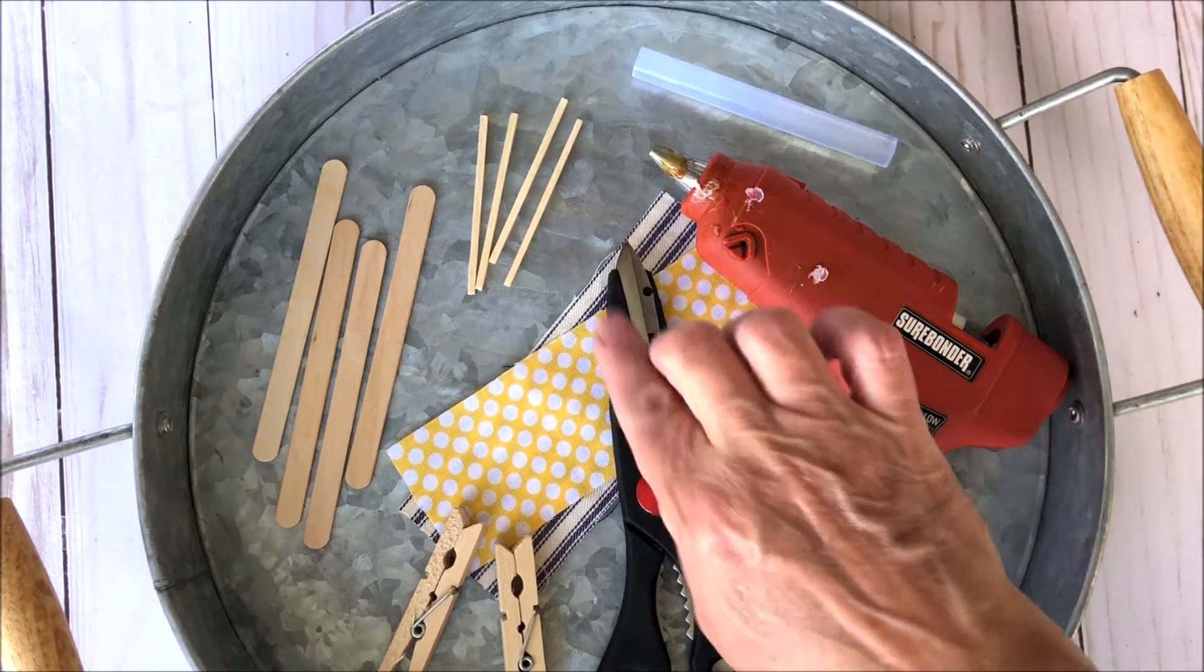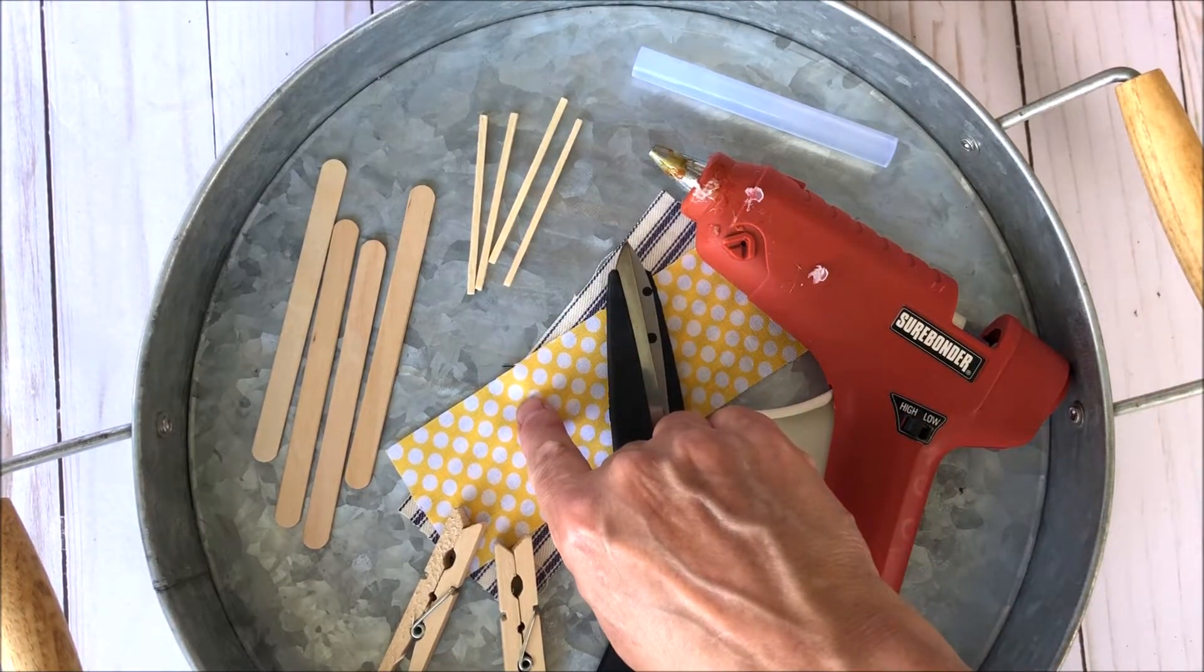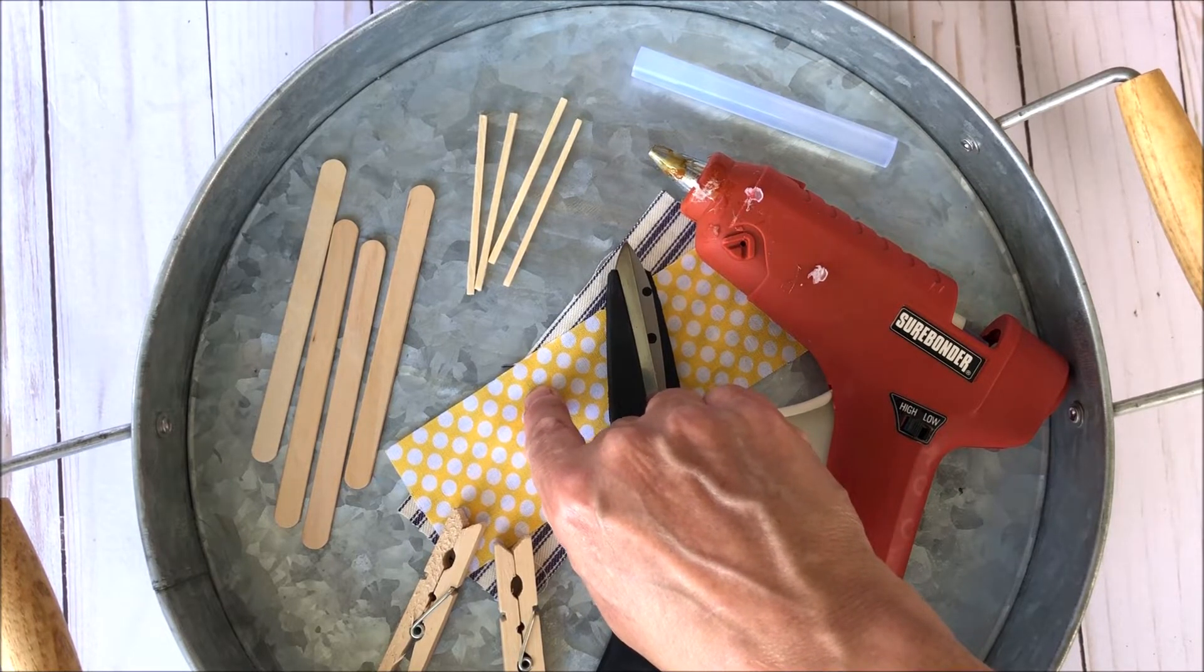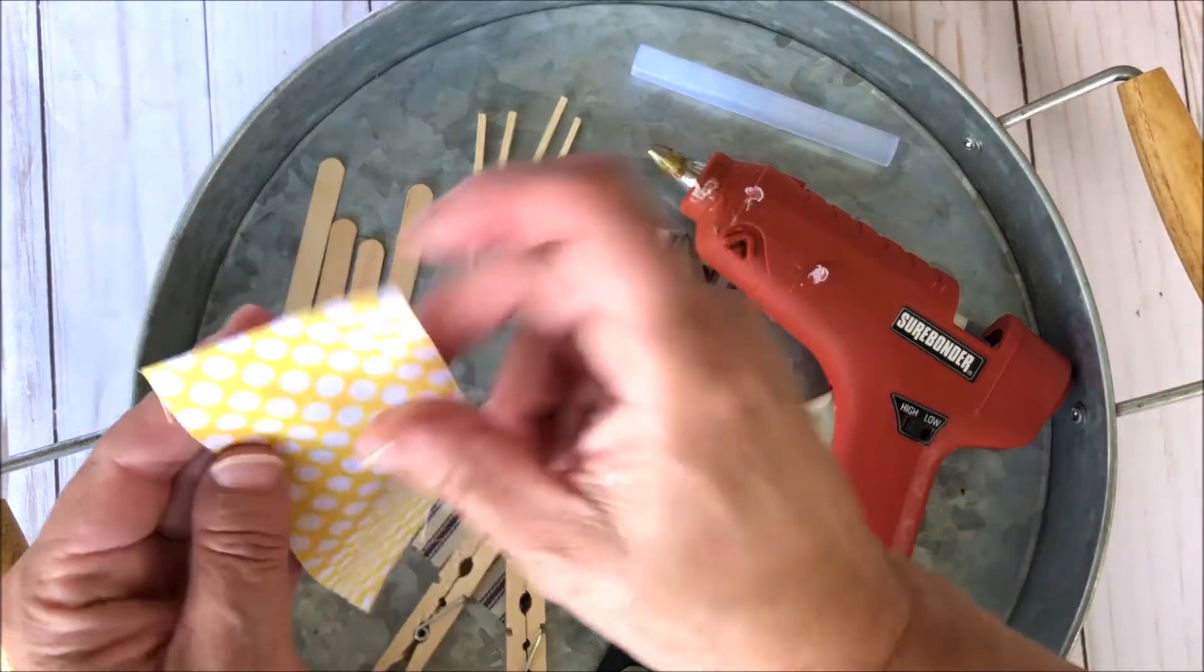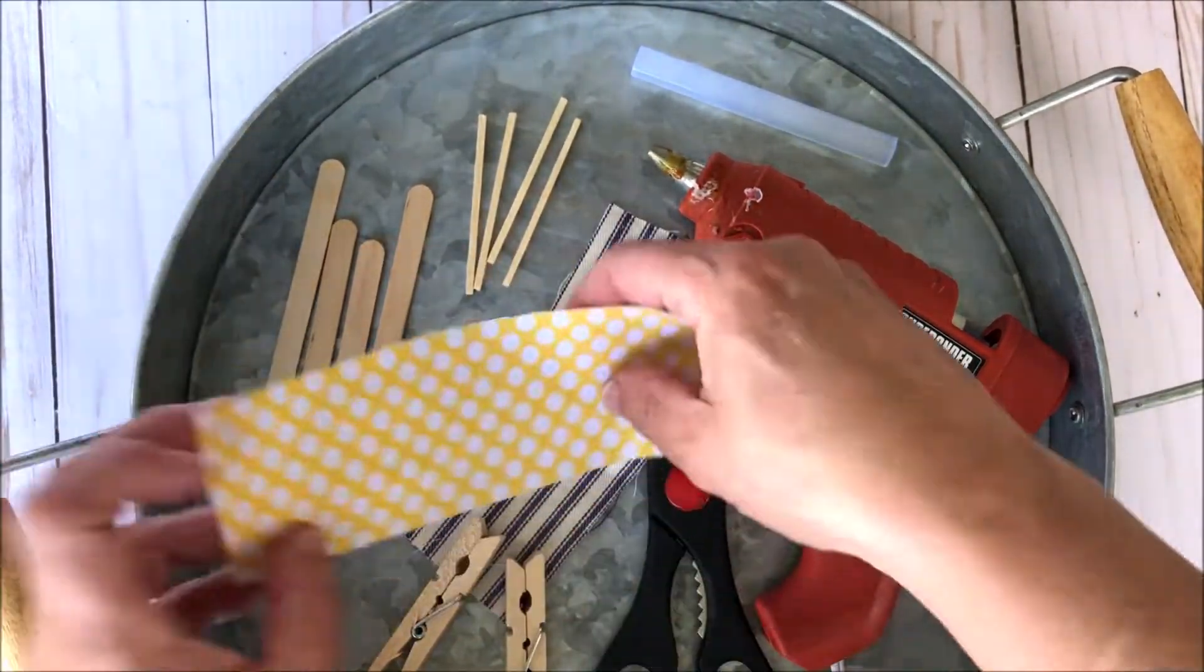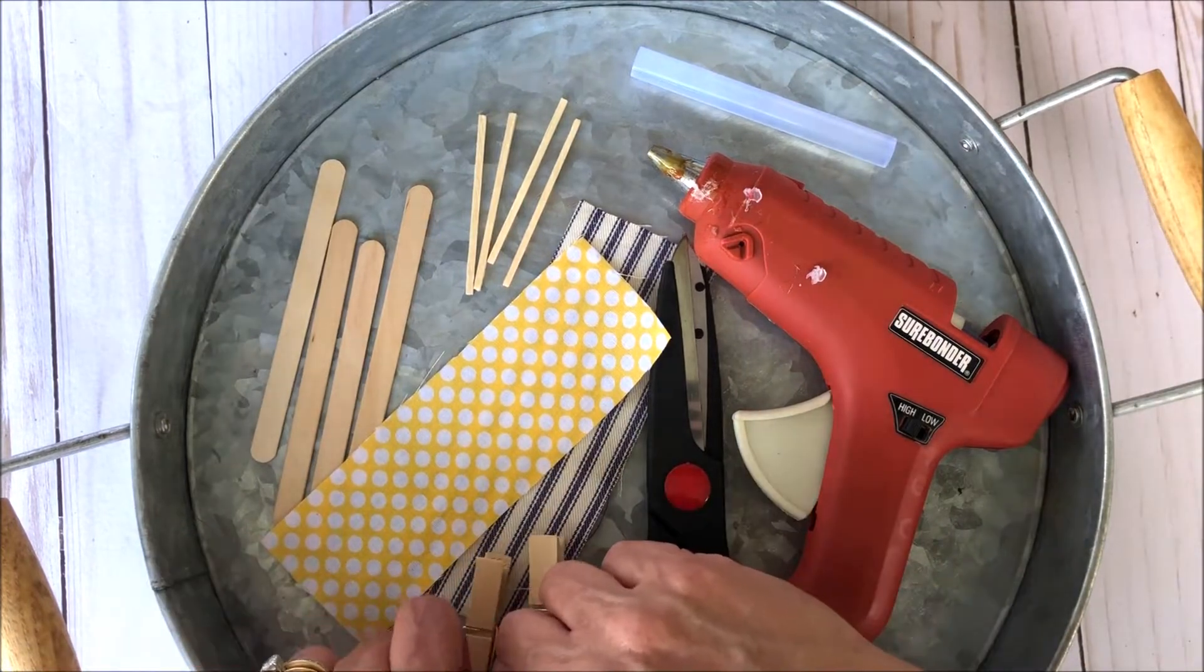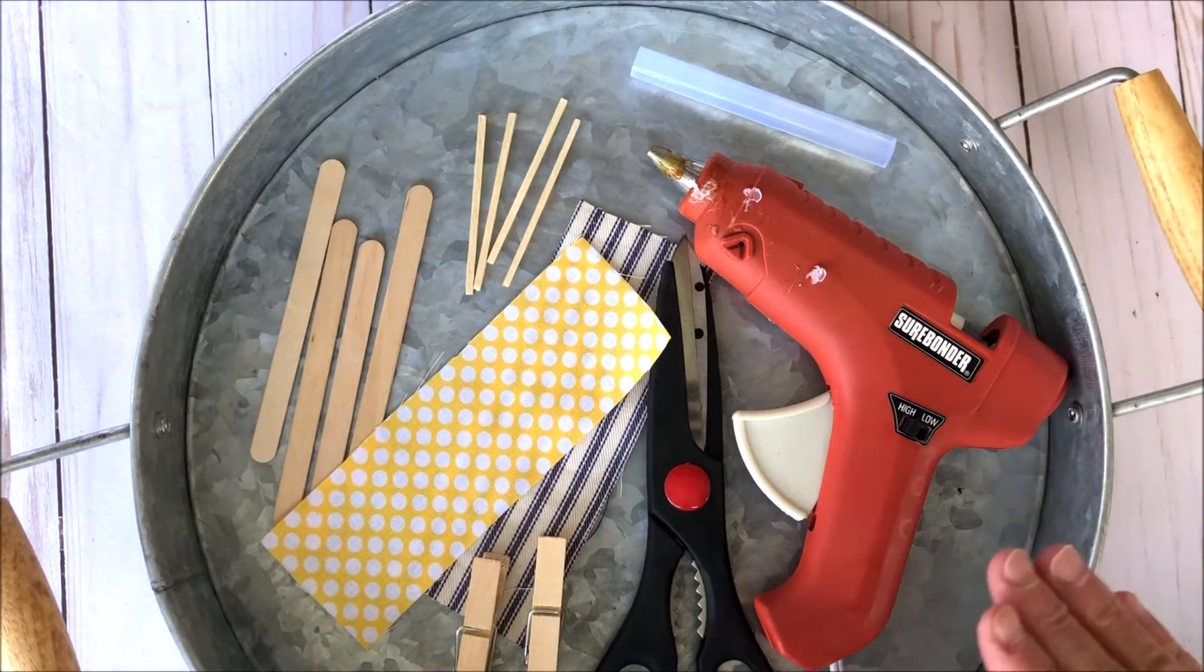A pair of scissors, some fabric cut in 2 and 1/4 inches by 6 inch lengths, 2 and 1/4 wide, 6 inch long, and some clothespins to hold the whole thing together while you're making it here.